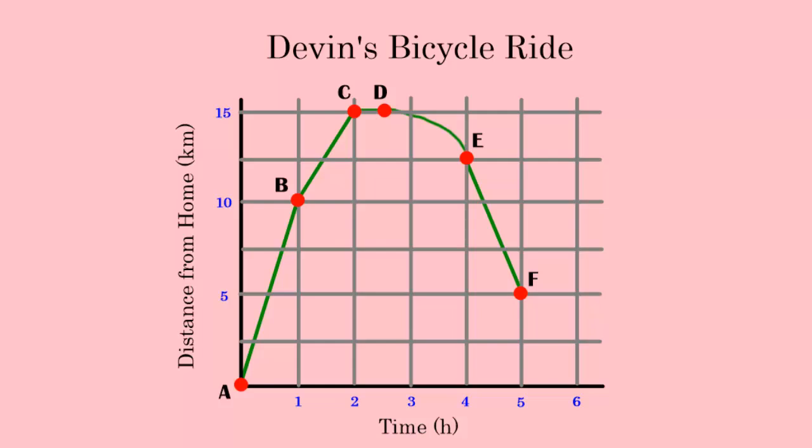From point B to point C, this also lasted one hour. But the distance traveled was only 5 kilometers, from 10 to 15. So his speed has now reduced down to 5 kilometers per hour. And notice how the line is not as steep as the line AB.